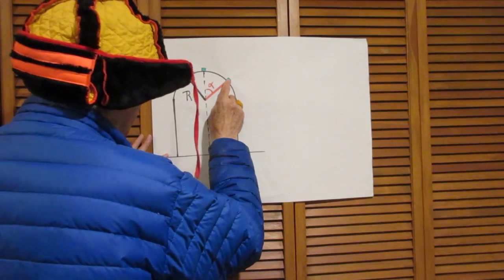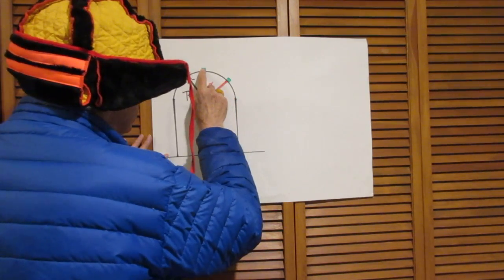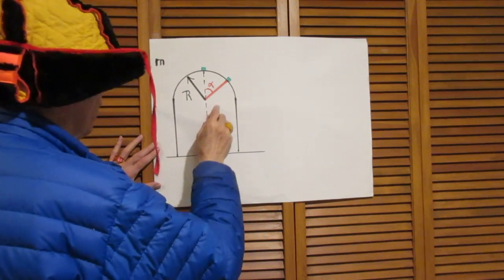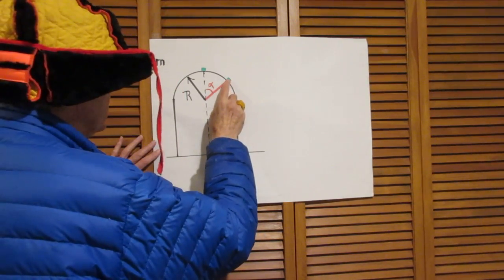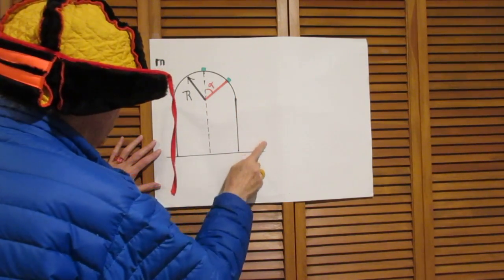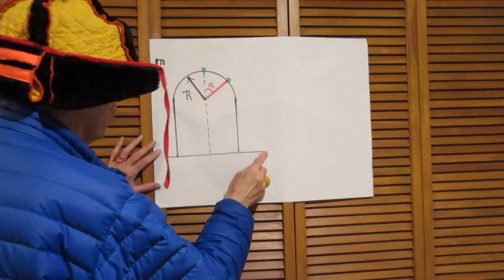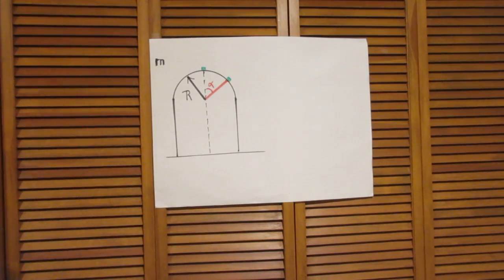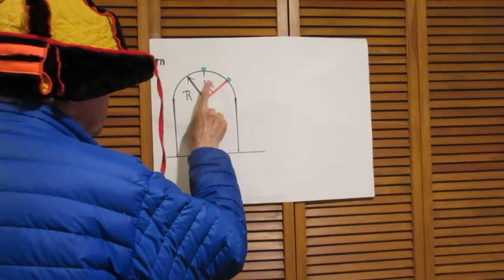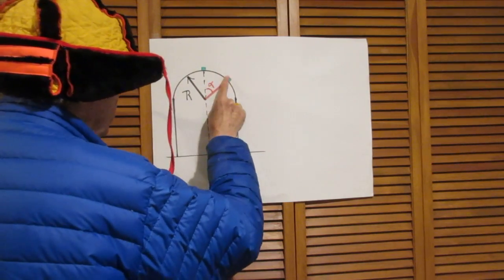Then there comes a point that she leaves the dome, that she is no longer in contact with the dome. Let's assume that happens here. She goes, and then the remaining trajectory from here to the ground would be a parabola. The question is: what is this angle alpha at which that happens?